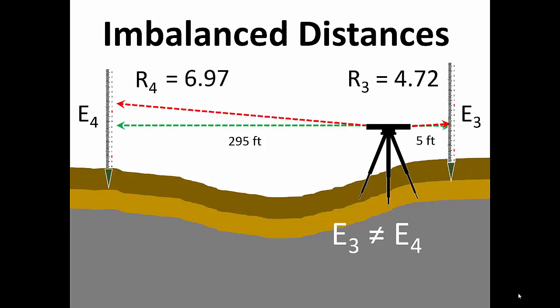Now watch carefully. Reading R3 plus the elevation difference found from the first setup will give us a result called R4 ideal. R4 ideal is the theoretical reading we should get if the line of sight is truly horizontal.